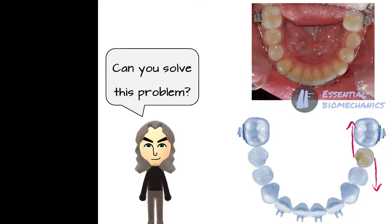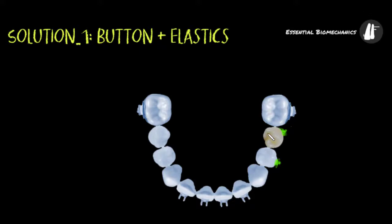By bounding buttons to the buccal and palatal surface of the rotated tooth and using elastic chains attached to it and neighboring teeth, we can solve this problem. Probably this is the easiest solution. I'm sure it works, but let's discuss some disadvantages of this approach.